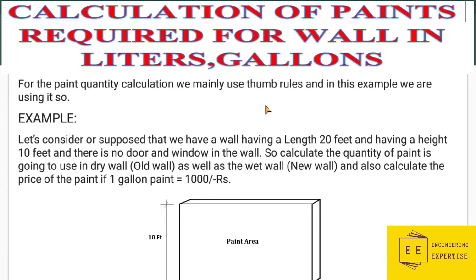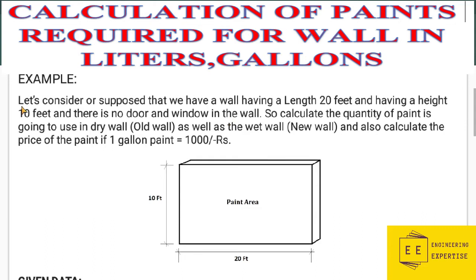For our example, suppose we have a wall with a length of 20 feet and a height of 10 feet, and there is no door or window in the wall — meaning no opening. If there is an opening, you can deduct that opening from the area of the wall. In our case we have no opening. We will calculate the quantity of paint for a dry wall (old wall) as well as a wet wall (new wall).